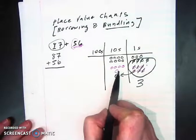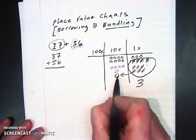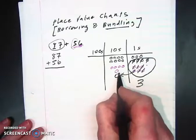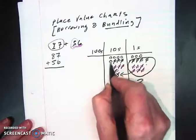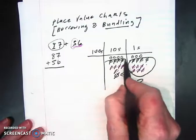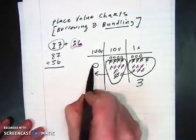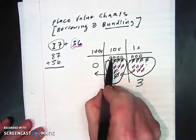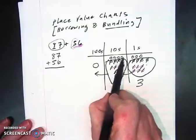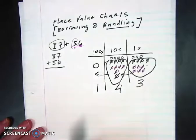Now we have the same problem here. We've got probably more than 10 10s here. So we're going to do some more bundling. 1, 2, 3, 4, 5, 6, 7, 8, 9, 10. So once again, we're going to take these 10s and move them over here. So now we have those 10 10s become 100. And so what do we have left behind? 1, 2, 3, 4. And then of course we have 1 100 right there. So believe it or not, our answer is 143.